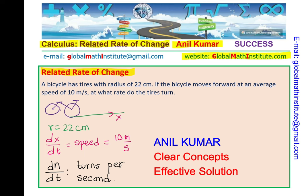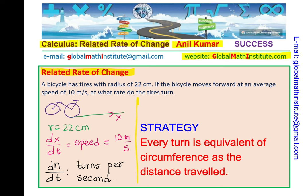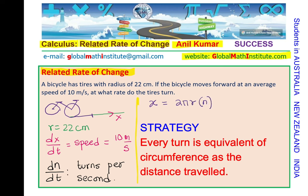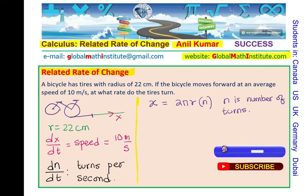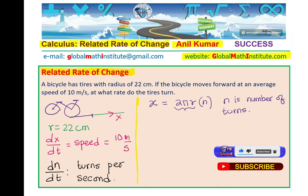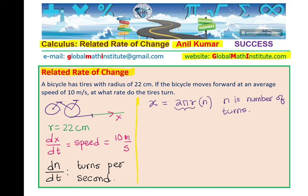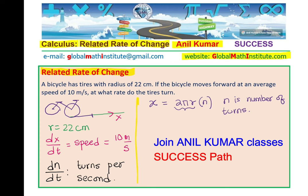Now, how do we solve such questions? The first thing is to relate the variables. As you see, the circumference is 2πr. So the distance traveled x equals 2πr times n, where n is the number of turns — since in each turn it goes one full circle. So 2πr is the circumference, n is the number of turns, and that is how distance is related with number of turns. Once you relate them, you differentiate and get your answer.